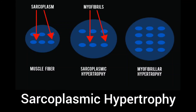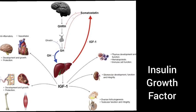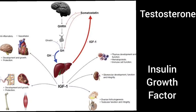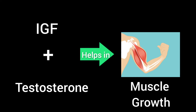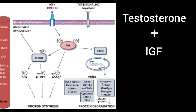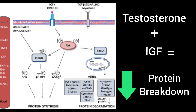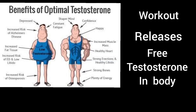For our hormones, they help muscle growth with satellite cell activation. Insulin Growth Factor, IGF, and testosterone work together. They increase protein synthesis and help reduce protein breakdown, releasing testosterone to support muscle growth.